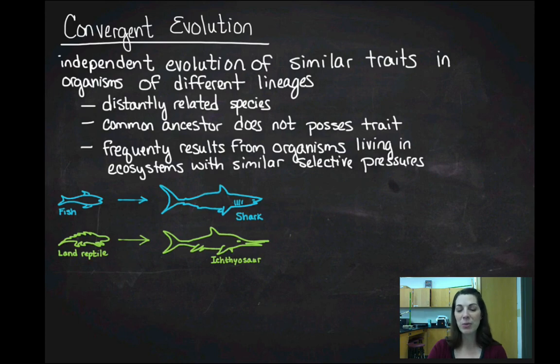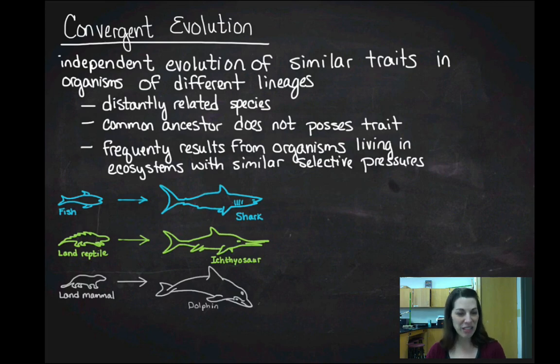And I know you guys know what the next one that's coming is. If I look at a pretty generic ancestral land mammal, so ferret-like or large rat-like, the mammalian lineage also has a very similar shaped organism. So the dolphin also has that very similar shape. So here's three different lineages, fish, reptiles, and mammals. And I'm getting organisms out of those three different lineages that all arrive at the same shape.